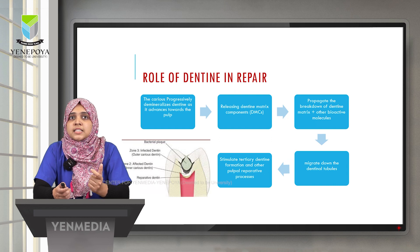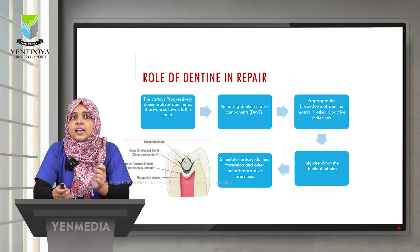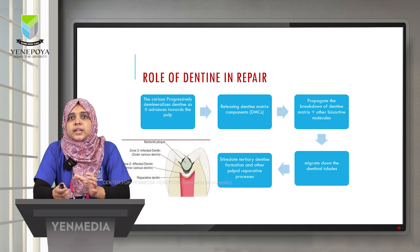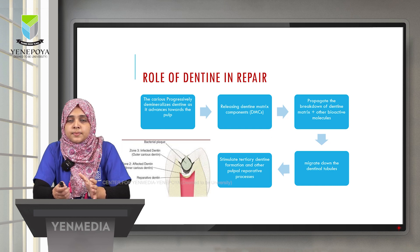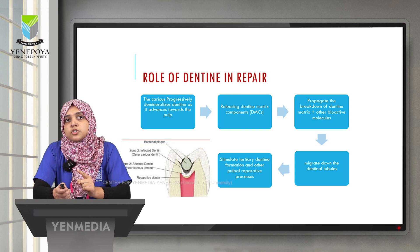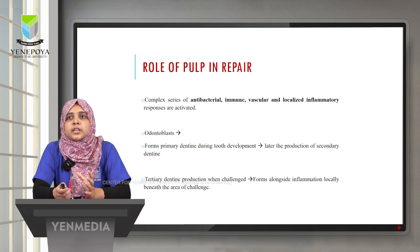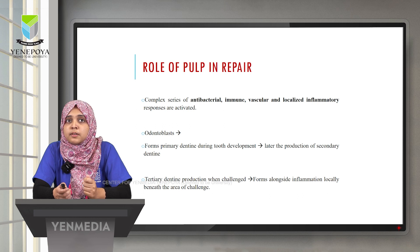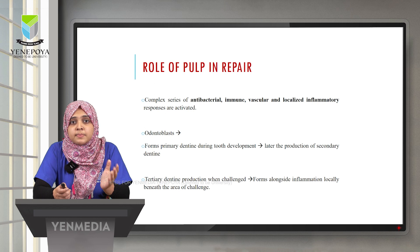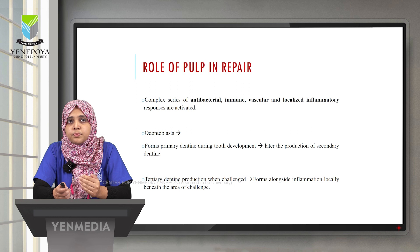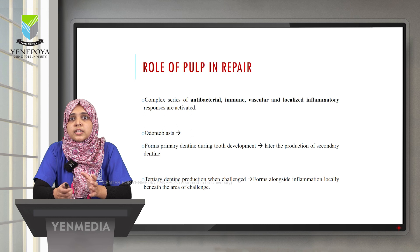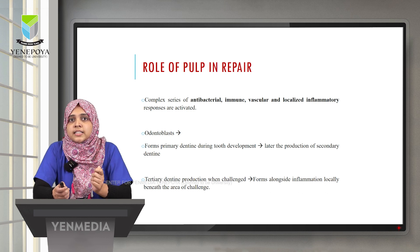Dentine plays a role in repair: as caries progresses and demineralizes dentine, it releases dentine matrix components and bioactive molecules that migrate down the dentinal tubules and stimulate tertiary dentine formation and pulpal reparative processes. The pulp reacts through a combination of inflammation and promotion of mineralization. Odontoblasts, which form primary and secondary dentine, can also form tertiary dentine in response to a challenge, locally beneath the area of the challenge.